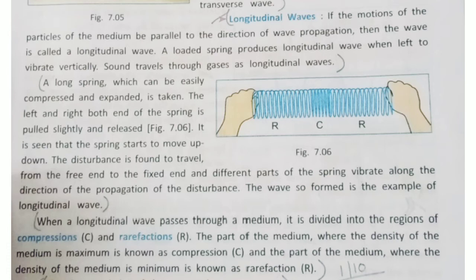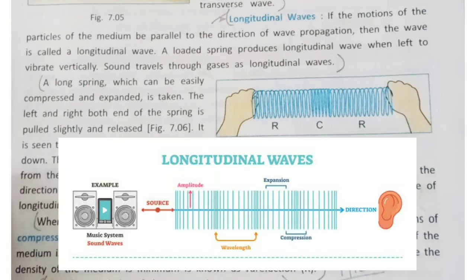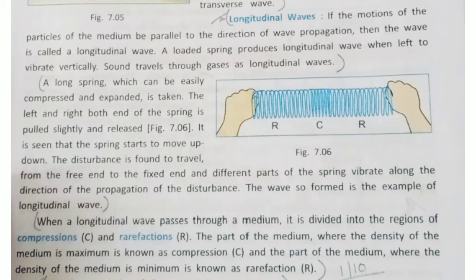Longitudinal waves: if the motions of the particles of the medium are parallel to the direction of wave propagation, the wave is called a longitudinal wave. A loaded spring produces longitudinal waves when left to vibrate vertically. Sound travels through gases as longitudinal waves, whereas light travels as transverse waves. When a long spring is pulled slightly at one end and released, the disturbance travels along the direction of propagation — this is an example of longitudinal waves.